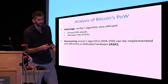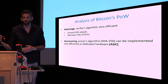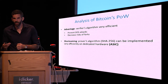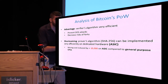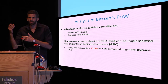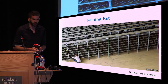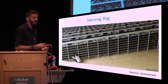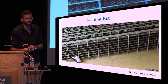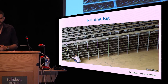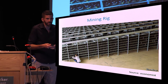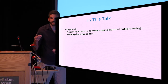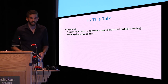But there is also a disadvantage. The prover's algorithm can be implemented very efficiently on dedicated hardware — ASIC, application-specific integrated circuit. In fact, the cost of computing the prover's algorithm is more than 10,000 times less on ASIC compared to general CPUs. Today, mining is done in huge hangars containing thousands of dedicated hardware components specialized in computing SHA-256. It has become a centralized industry, which is contrary to the philosophy of Bitcoin. So in this talk, I'm going to present an approach to fight this centralization using what is called a memory-hard function.